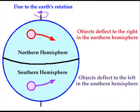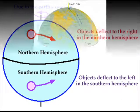In the northern hemisphere, objects appear to curve to the right, while in the southern hemisphere, objects appear to curve to the left.